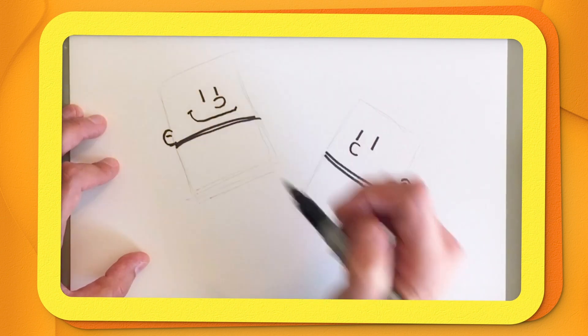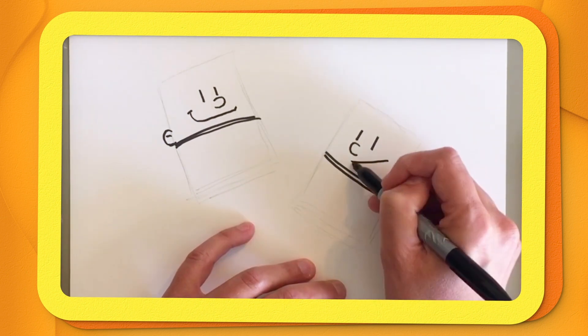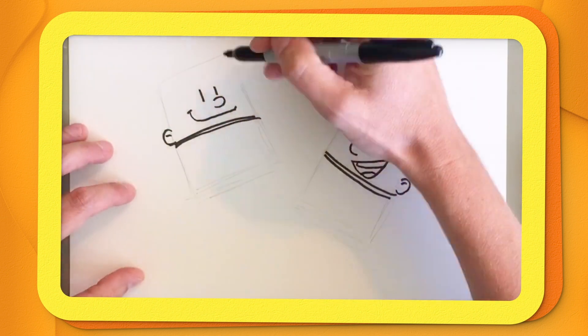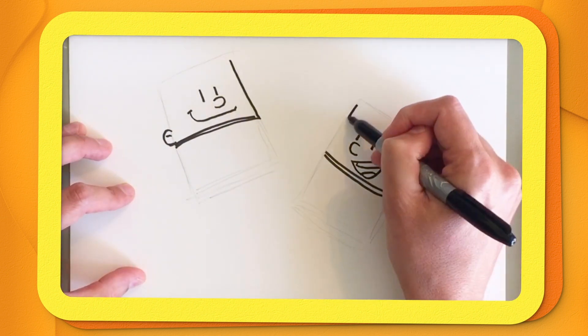George will have a very kind of normal smile. And Harold will be a little bit more like he's laughing. And then we need to give them the size of their faces.